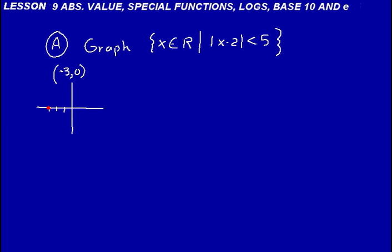Now, if we wanted to think about the distance from the origin, this distance here, we would say that's a distance of 3. We wouldn't say it's a distance of minus 3. Just looking at the length involved, the distance involved there, we would say that is 3.